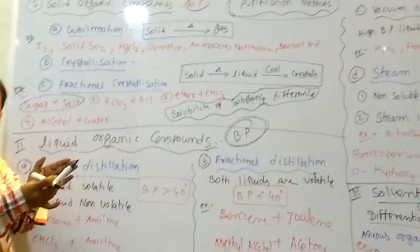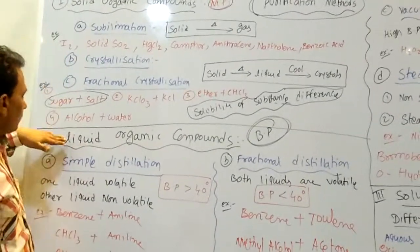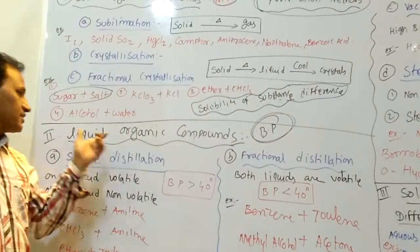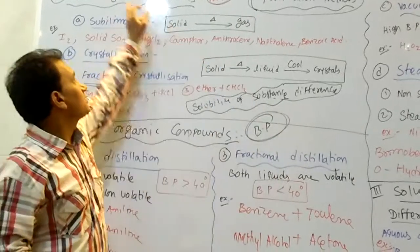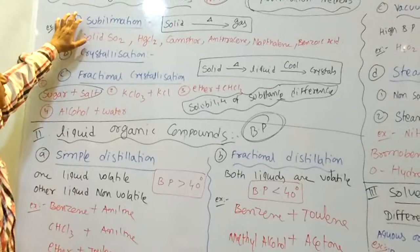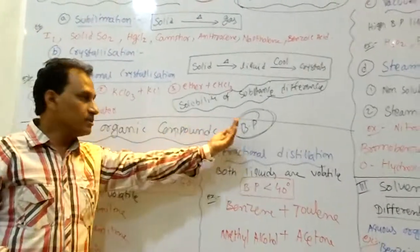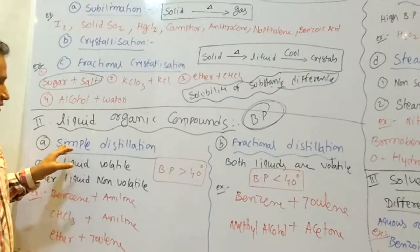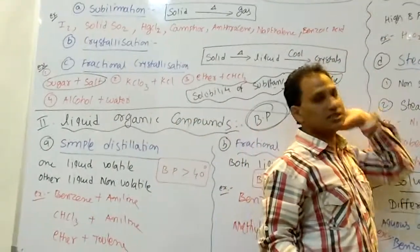For liquid organic compounds, if the organic compound contains impurities as liquids, they are purified on the basis of boiling point. Solids are purified on the basis of melting point by sublimation and crystallization. But liquids are purified on the basis of boiling point by four types: simple distillation, fractional distillation, vacuum distillation, and steam distillation.